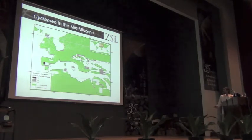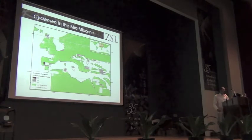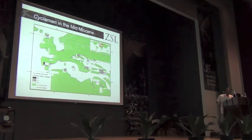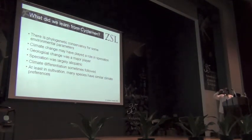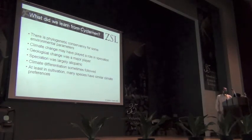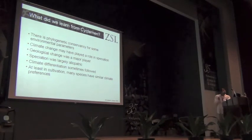Ideally what we would do is then go and look for fossils in a particular area, or have some fossil evidence that would either validate or invalidate these models. Unfortunately, cyclamen have no fossil record. So what did we learn? There is phylogenetic conservancy for environmental parameters — some groups have adapted to certain climatic conditions and then diversified within those conditions. Climate change may also have played a role.